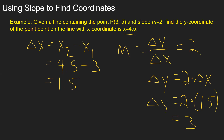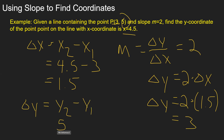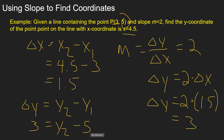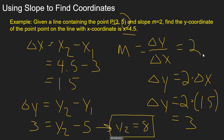That's the change in y, but we were asked to find the actual y-coordinate. If you remember, the increment of y equals y2 minus y1. We know y1 is 5 and the increment of y is 3, so we're solving for y2. y2 equals 3 plus 5, which gives us 8. So the y-coordinate would be 8 for this particular situation.